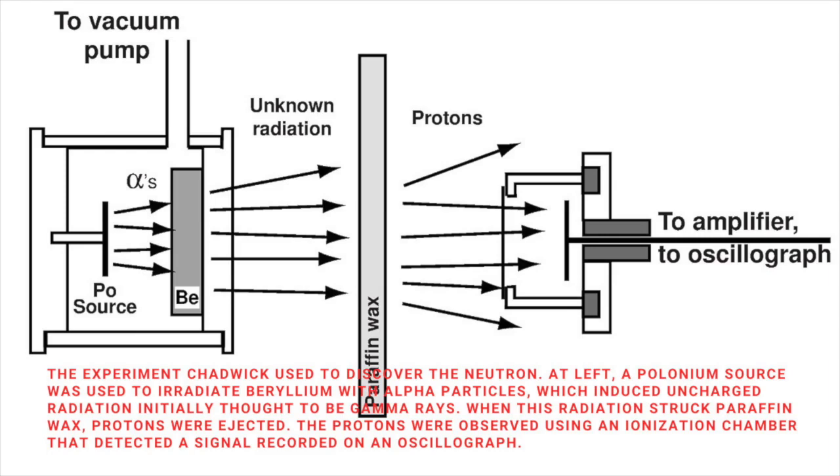In a paper published on February 17, 1932, he called this new particle the neutron, and three years later received the Nobel Prize in Physics for his work.